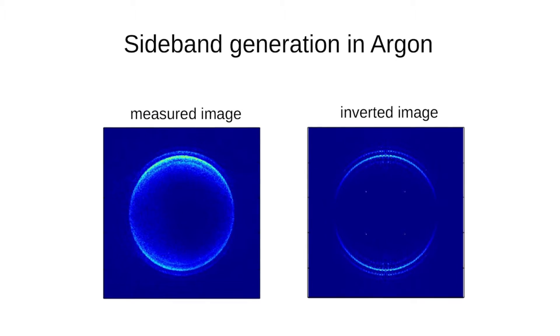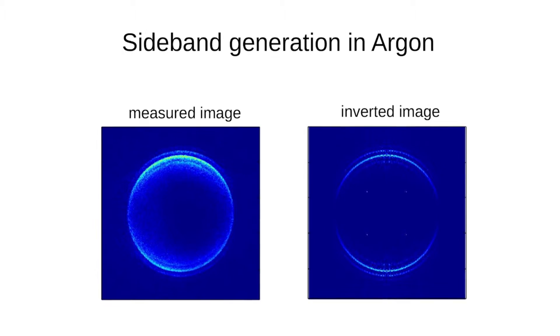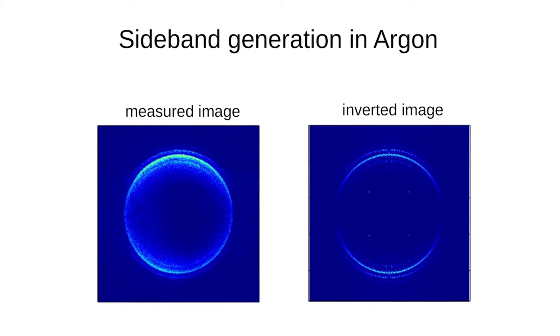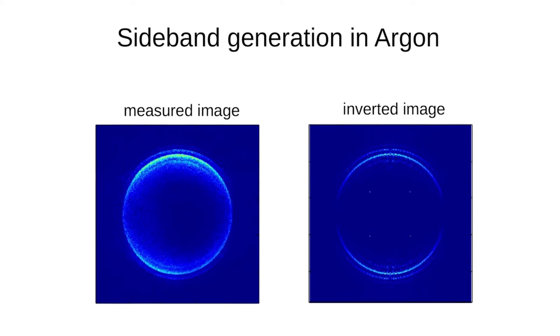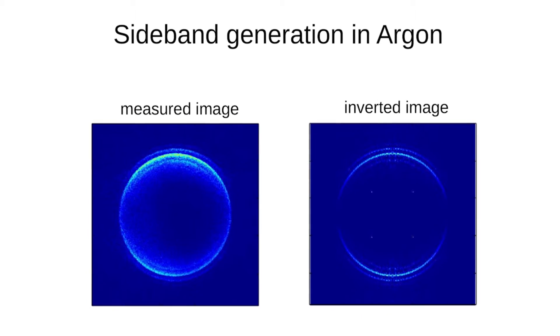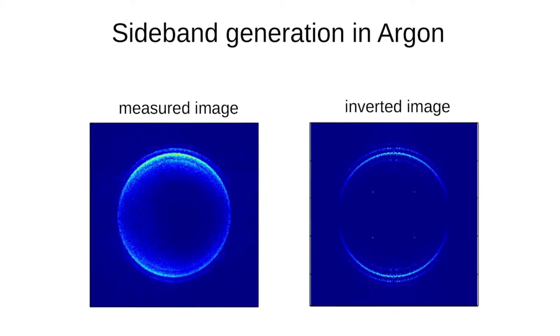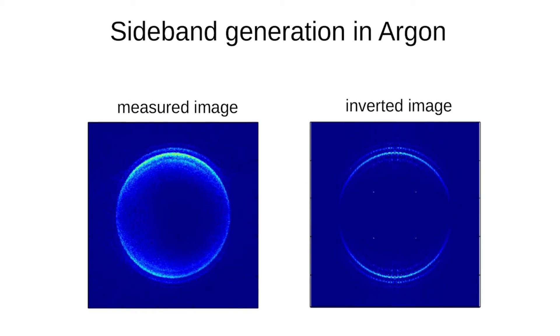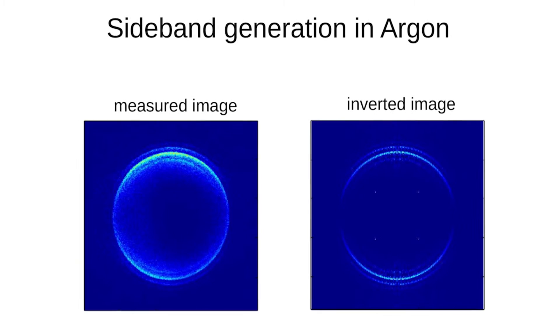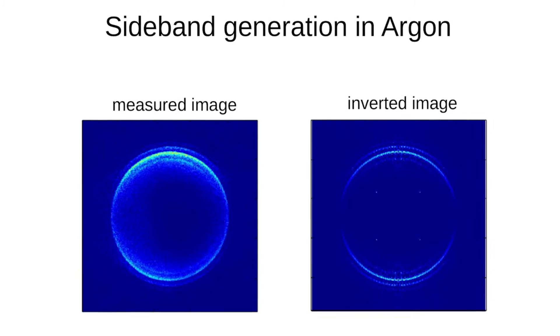Here on the screen, you can see the actual experimental measurement. On the left, you can see the image recorded in ionization of argon atoms by XUV photons. This image can be transformed into a slice through a three-dimensional distribution, owing to the cylindrical symmetry of the ionization. On the right-hand side, we see the reconstructed image.